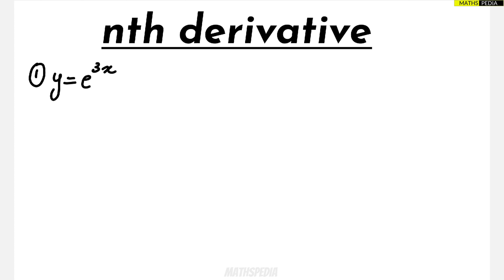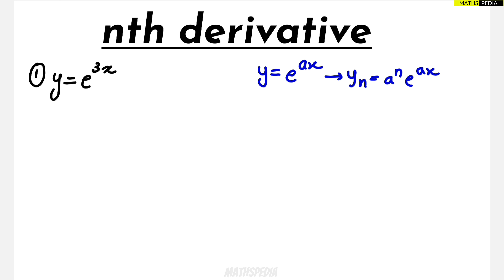In this video we are going to solve problems based on nth derivatives. We are taking basic problems and solving directly from the formulas. We can relate the first problem to y = e^(ax), and the nth derivative of e^(ax) is a^n · e^(ax). Here the value of a is 3, so y_n = 3^n · e^(3x). This will be the answer for the given problem.